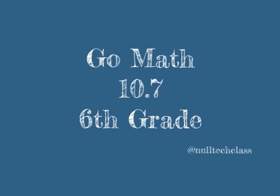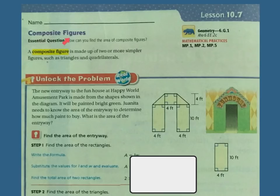Good morning. Today's lesson is 10.7, Composite Figures. Our essential question: how can you find the area of a composite figure? A composite figure is made up of two or more simpler figures, such as triangles and quadrilaterals.